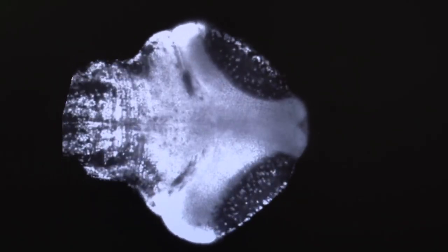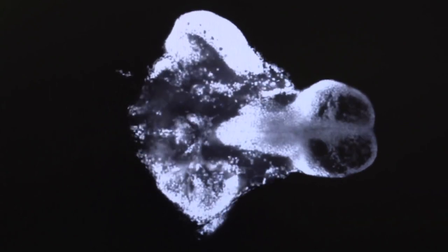We're recording the activity of thousands of individual neurons in the brain while the fish are performing a behavioral task. In our case, we're particularly interested in how they hunt for food. The brain is made up of a circuit, just like an electrical circuit. It's a cluster of neurons that are connected to each other.